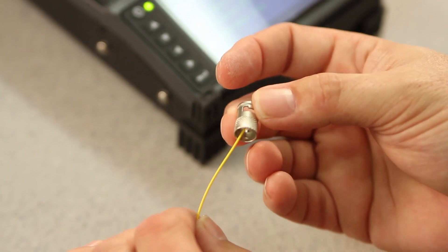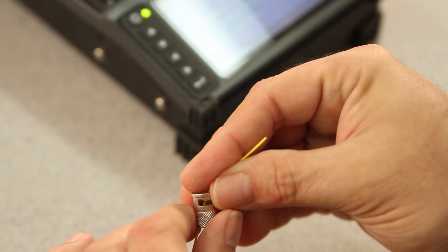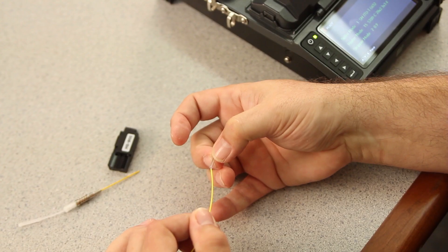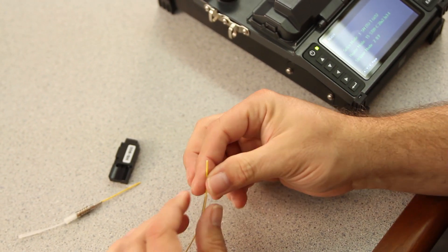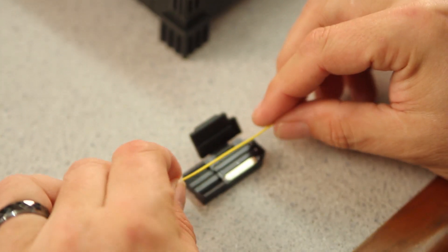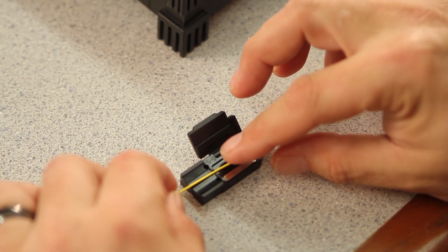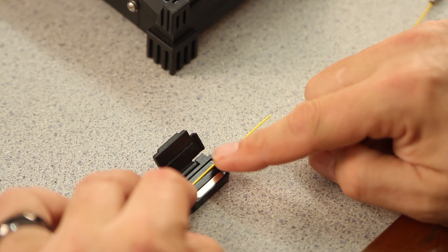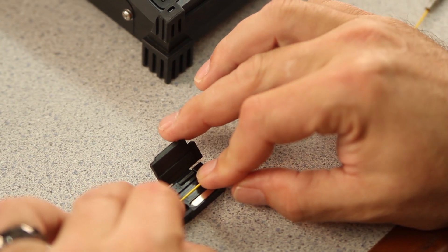Install your bayonet, thread it onto your fiber, and then your shrink sleeve. Now, load your fiber into your 900 micron holder, placing the fiber in the center channel, leaving one inch tail from the front.